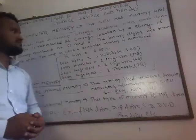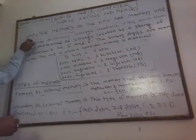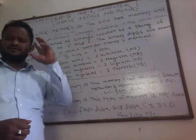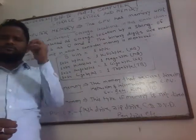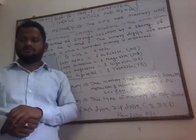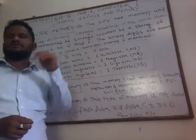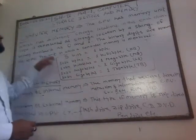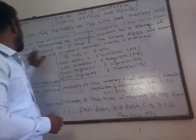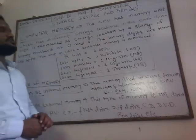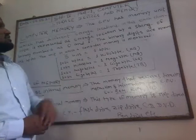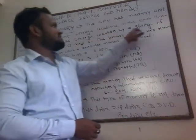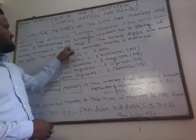In this class, we will study computer memory. Just as we know the way the brain works, the same way the computer works — this is called computer memory. The CPU has a memory unit which has different storage locations. Each character is represented at a storage location by a string of binary numbers: 0 and 1.